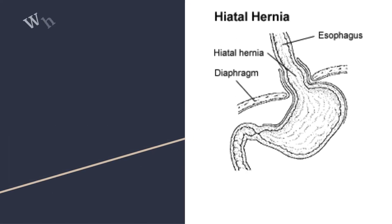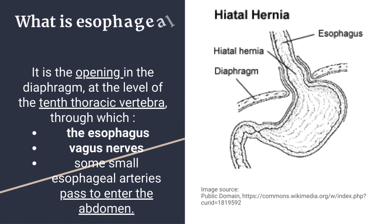Before we discuss any further, we should know about what is the esophageal hiatus. It is the opening in the diaphragm at the level of the 10th thoracic vertebra through which the esophagus, the vagus nerves, and some small esophageal arteries pass to enter the abdomen.